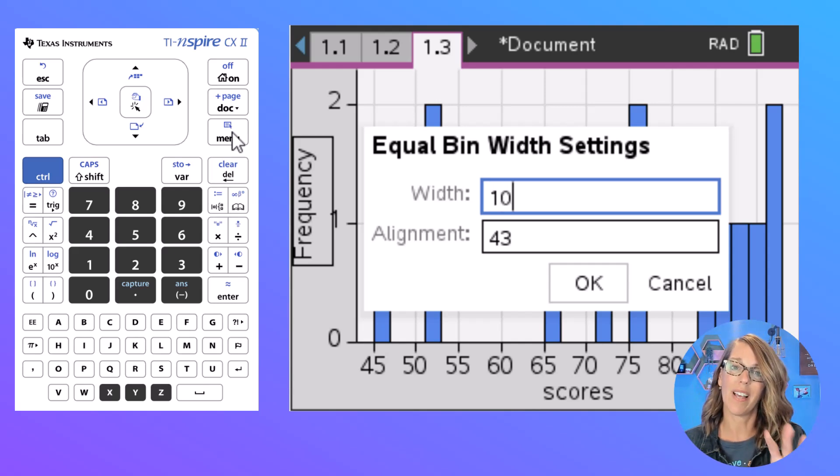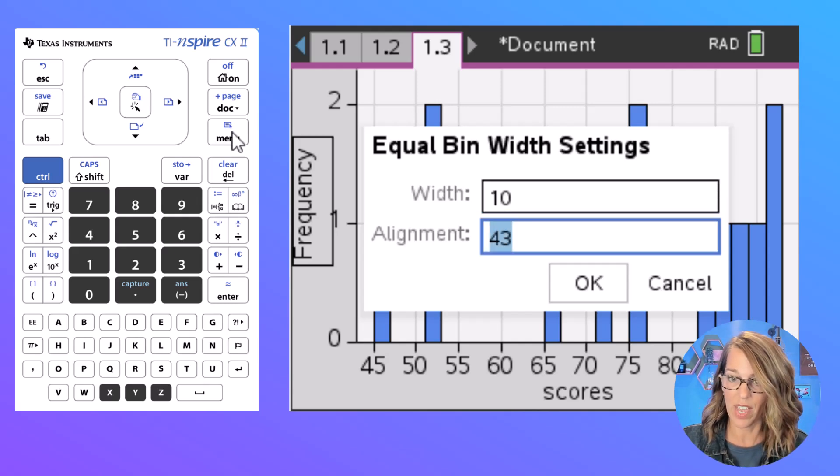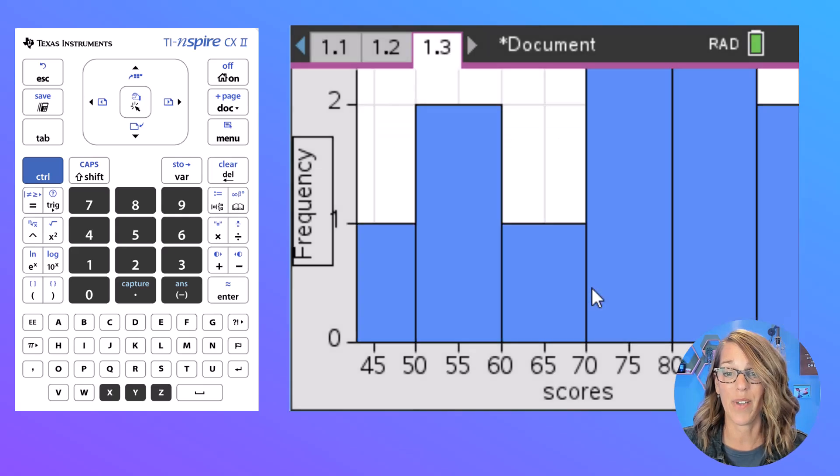Now it assumes that I want my alignment at my minimum value, but what I really want is to start this at 40. So I've got a column at 40 or a bar at 40, a bar at 50 and so on. So I'm just going to tab down and change that to 40, and then let's go ahead and click OK.